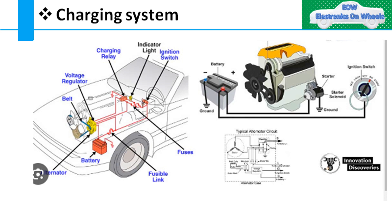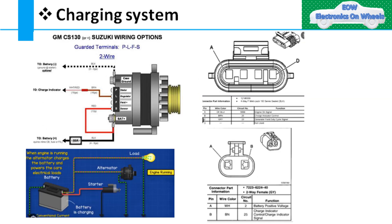In the next slide, I will show you how it's connected to the battery and other loads through the fuse box. As you can see in the figure, the alternator can have a 2-pin connector or a 4-pin connector based on the type of connector and function. The 2-pin connector has one pin for battery positive voltage and the other pin is used to show the charge indication on the cluster.